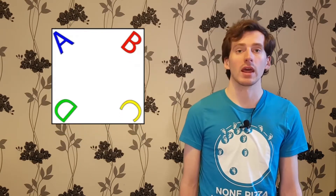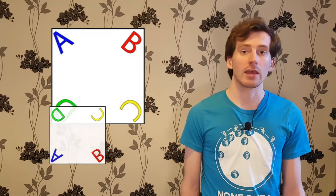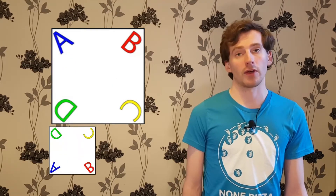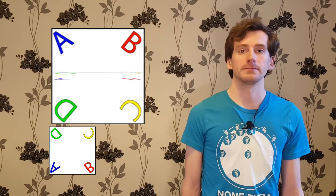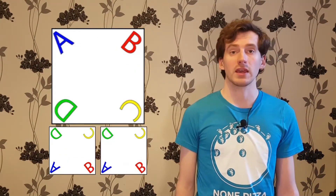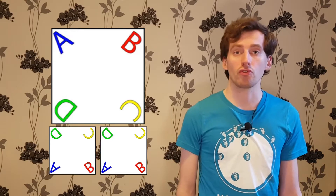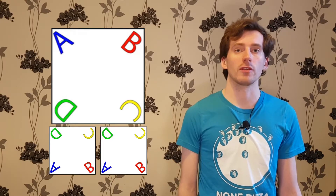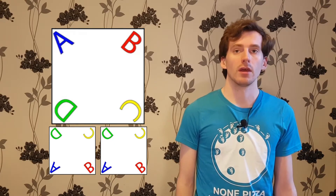Here, for example, is a reflection followed by a rotation, and it's the same as doing another reflection. This led us to thinking about groups of symmetries of shapes.